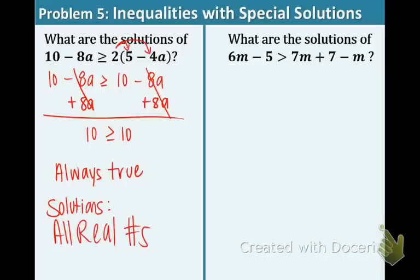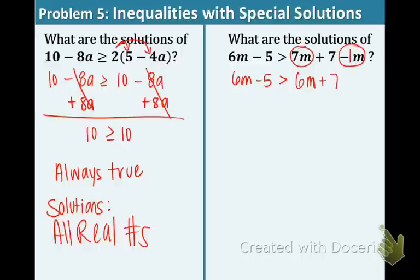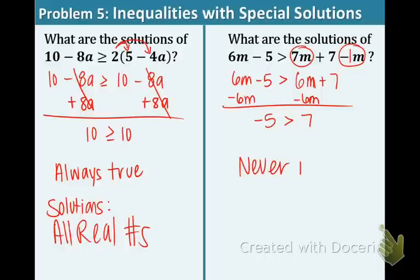Now let's try part B. We have 6m minus 5 on the left side. I see some like terms — a 7m and a minus 1m. When you combine those, you get 6m. And we have a 7 over there. Subtract 6m from both sides, and you get negative 5 is greater than 7. That's never true, so there is no solution for this inequality.